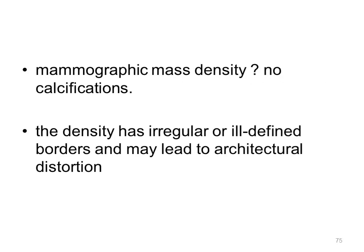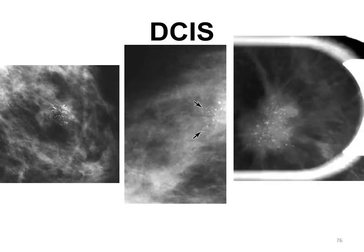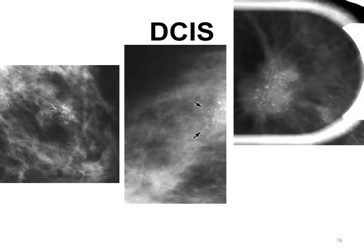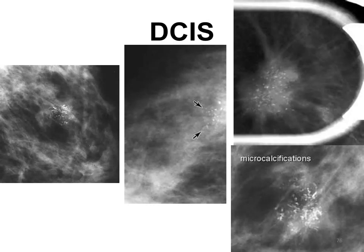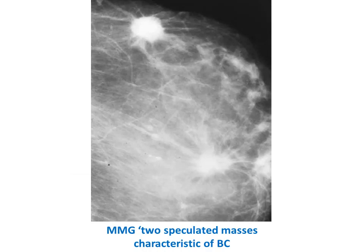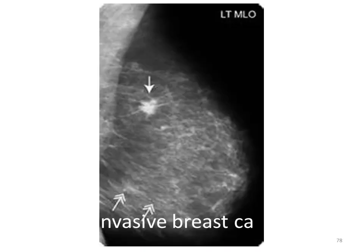On mammography, a mass density alone may represent breast cancer if it is irregular. It is not necessary to have calcifications to diagnose breast cancer — density with irregular or ill-defined borders and architectural distortion may indicate malignancy. Microcalcifications localized to one area, with different sizes and shapes, are also suspicious. Here we can see two spiculated mass densities on this mammographic picture, which is almost diagnostic of breast cancer. MRI can also show mass density.